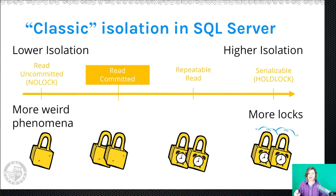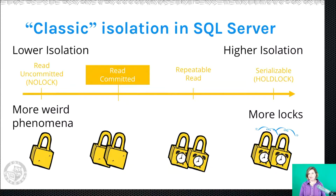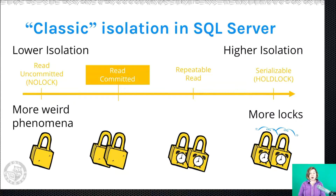The lowest classic lock-based isolation level in SQL Server is named Read Uncommitted — meaning I am willing to read data that hasn't been committed yet. This is also known as a dirty read. Even Read Uncommitted, whose hint name is NOLOCK, does use some locks — at least a schema stability lock to make sure the database or table isn't dropped while doing a read.